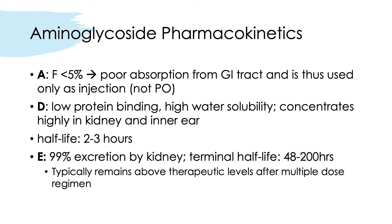Aminoglycoside pharmacokinetics include very poor bioavailability — it is not absorbed from the GI tract and is best administered as an IV or IM injection. It has low protein binding and high water solubility, and it concentrates highly in the kidney and inner ear, which explains the nephrotoxicity and ototoxicity. Volume of distribution increases with fluid overload, burns, and critical illnesses like heart failure and ascites. The half-life is around 2 to 3 hours, and it is primarily excreted by the kidney at approximately 99%. The terminal half-life is 48 to 200 hours, and urine concentrations can exceed peak plasma concentrations 25 to 100 times within one hour of administration.